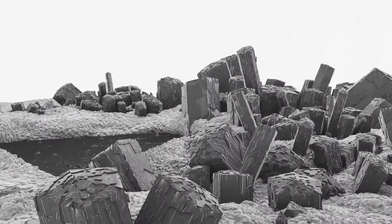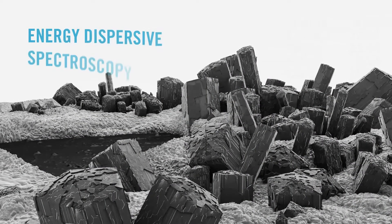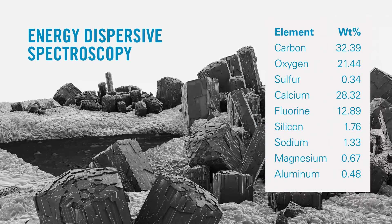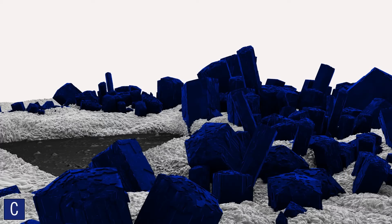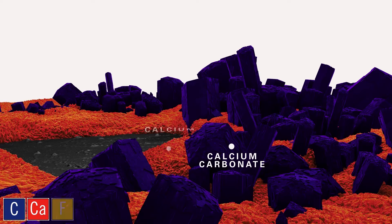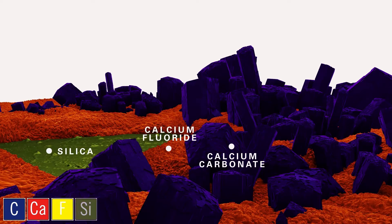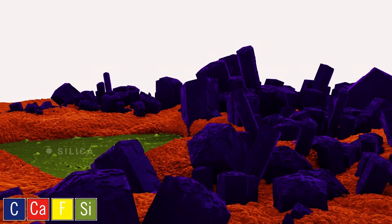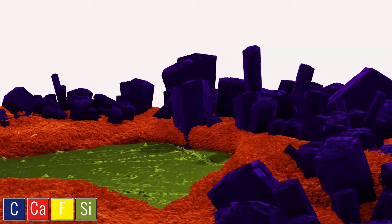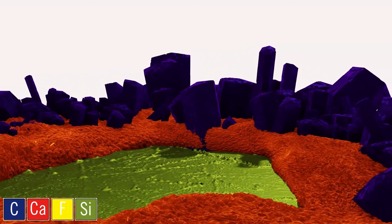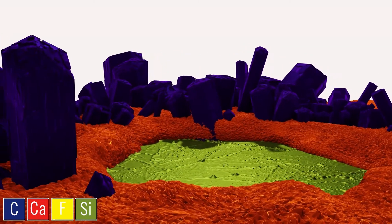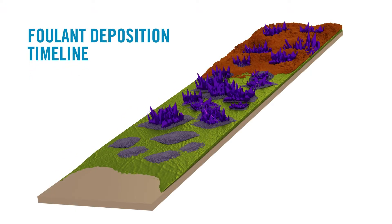In traditional imaging and composition analysis, we could see the morphology of the foulant material and the relative weight percentages of elements, but that was all. CEI has opened a new world where we can see the spatial distribution of elements in the foulant. We see how the elements complex to make compounds, and how they are layered, giving us a full history of the membrane in operation.